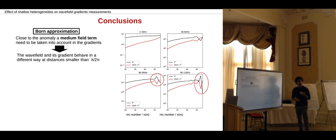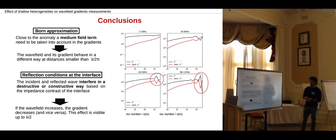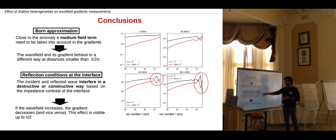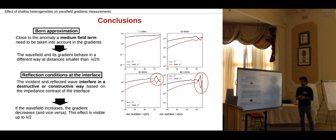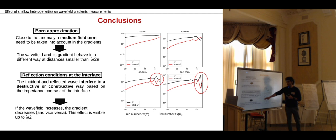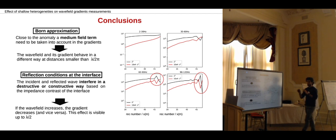The explanation that we have for that is that first, if we use the Born approximation, if we consider the gradients we need to take into account a medium field term. And second, if we just impose the reflection conditions at the interface, we see that the incident and reflected wave interfere in a destructive or constructive way. Basically what we see is that if the gradient increases, then the wavefield decreases, and the other way around.